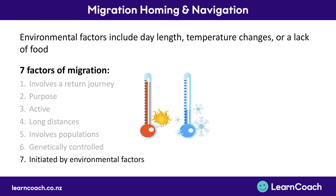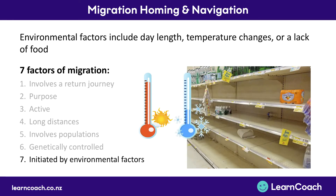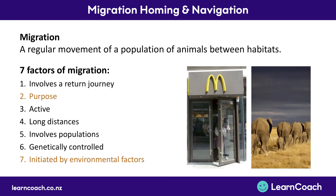Something is going to initiate that migration — think of this like the trigger. Once that trigger is set, that innate need to migrate kicks in and they fly across vast lands to find new places. While you should learn all seven factors, make sure you understand the purpose of why they migrate — reproducing, food, and changing climate — and the fact that it's initiated by environmental factors. These are the two most important ones to take home.